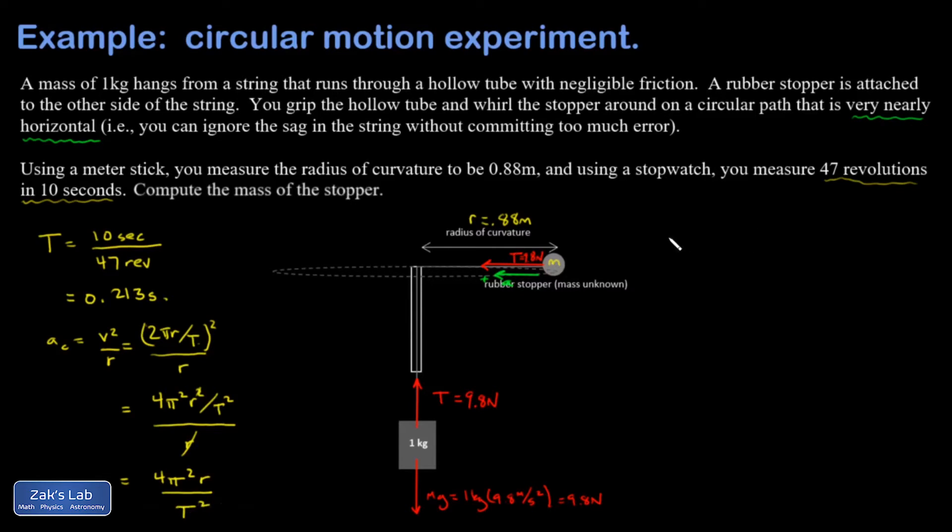Let's do our Newton's second law analysis on the mass in the horizontal direction. Again, we're just ignoring what's happening vertically—it's a reasonable approximation. So F net equals MA. There's only one force on this mass: the tension pointing towards the center of curvature. That's equal to M times 4π squared R over T squared.